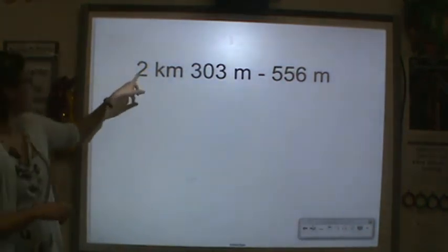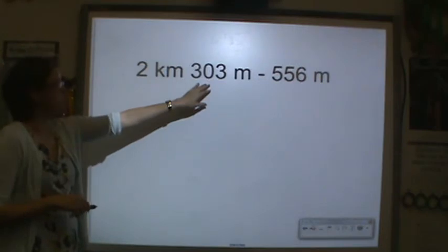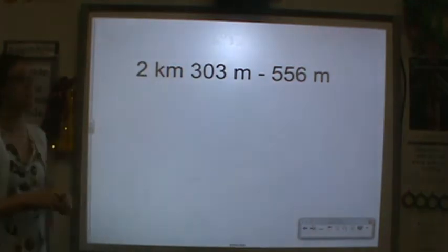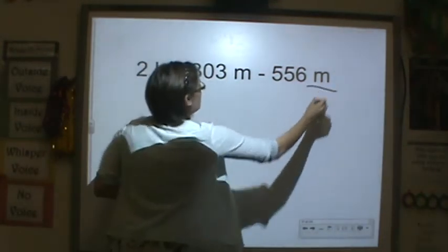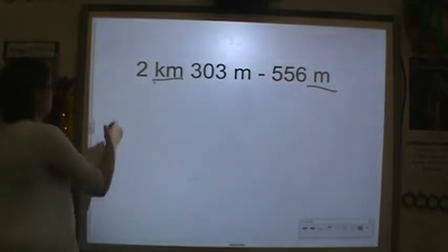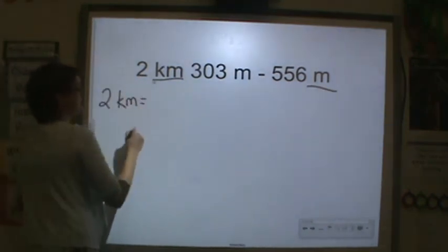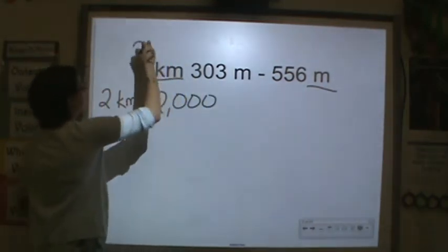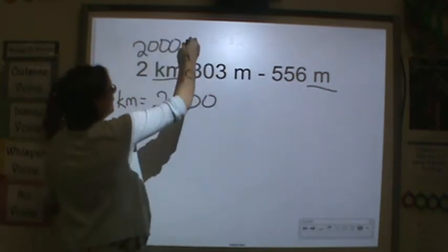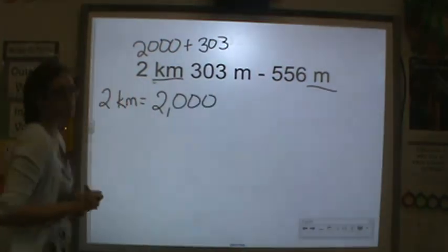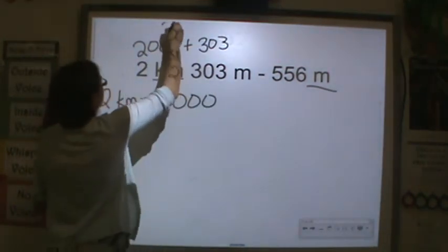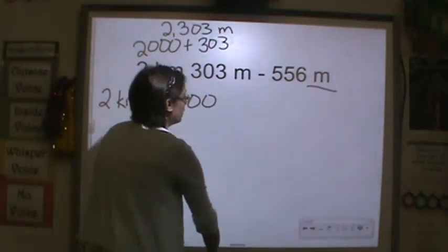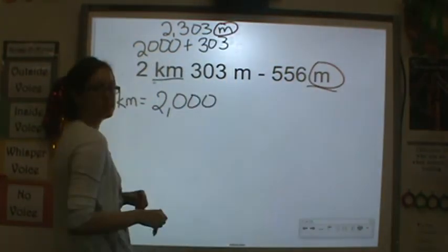Now let's try: 2 kilometers and 303 meters minus 556 meters. I can't subtract yet because the units aren't the same, so I need to convert first. Two kilometers equals 2,000 meters, so 2,000 plus 303 equals 2,303 meters.